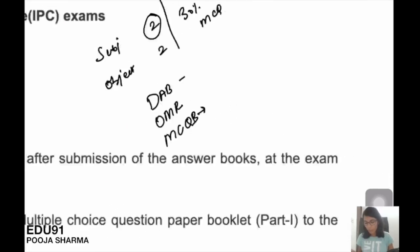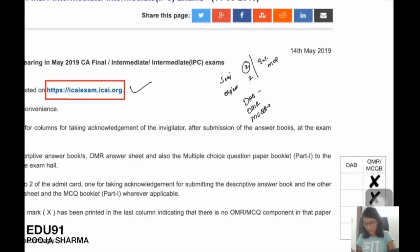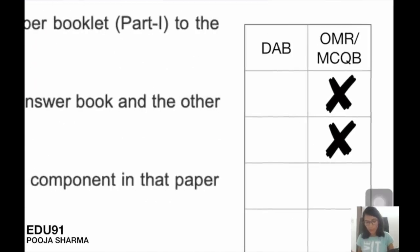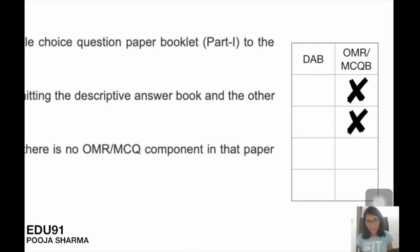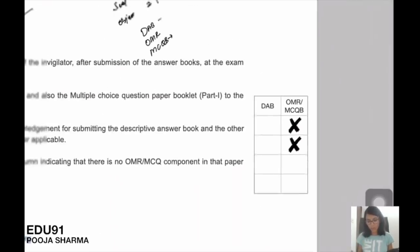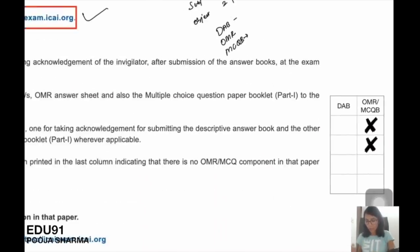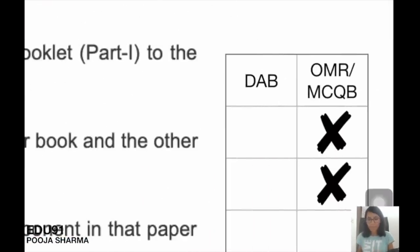On the admit card, there are columns for the invigilator's signature, and you need to take an acknowledgment. If you have an OMR or MCQ paper, there will be a cross marked on the admit card for that paper.